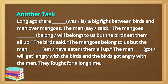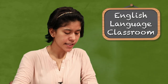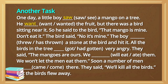Here is the paragraph solved: 'Long ago, there was a big fight between birds and men over mangoes. The men said: the mangoes belong to us, but the birds eat them all up. The birds said: the mangoes belong to us, but the men eat them all up. The men got angry with the birds and the birds got angry with the men. They fought for a long time. One day, a little boy saw a mango on a tree. He wanted the fruit, but there was a bird sitting near it. So he said to the bird: that mango is mine, do not eat it. The bird said: no, it is mine. The boy threw a stone at the bird and hit it. All the birds in the tree got very angry. They said: the mangoes are ours, we will eat them, we won't let the men eat them. Soon a number of men came there. They said: we will kill all the birds, but the birds flew away.'